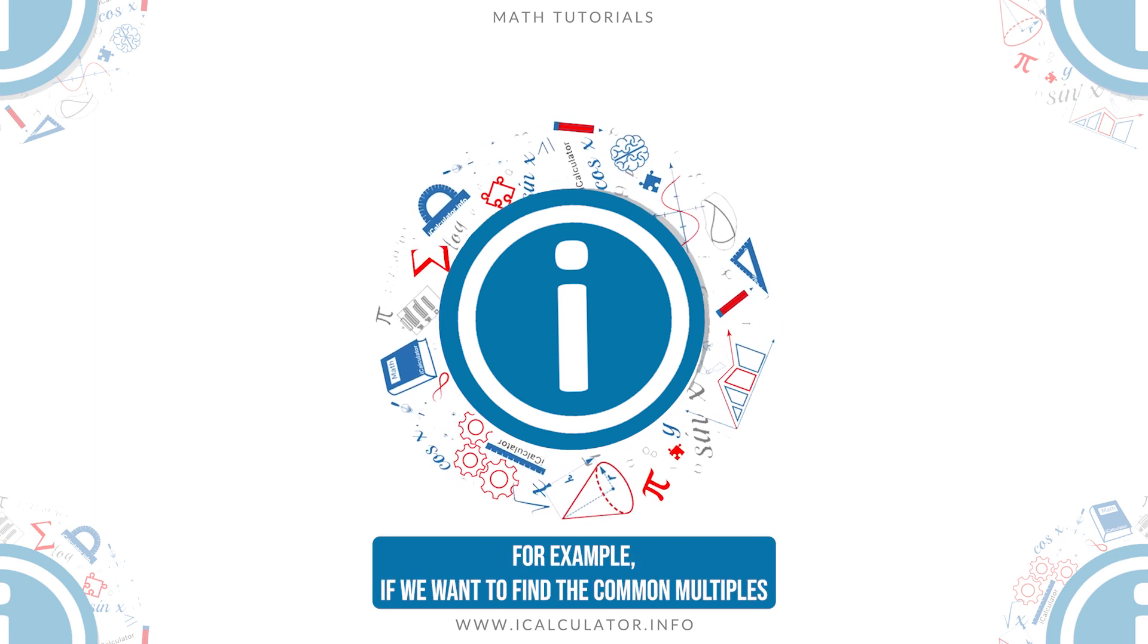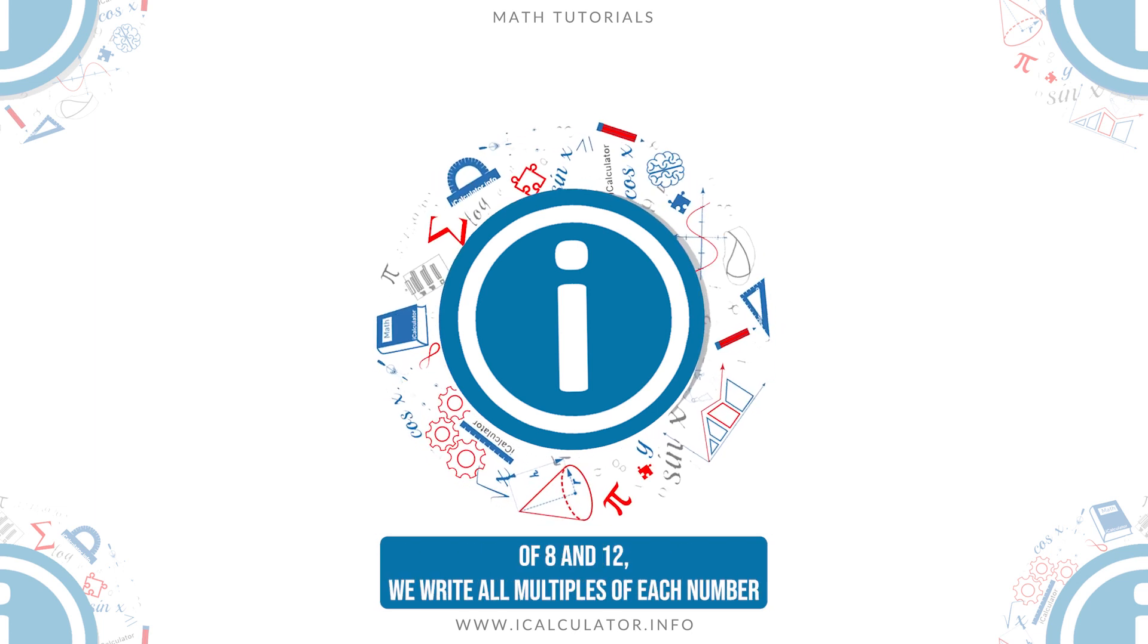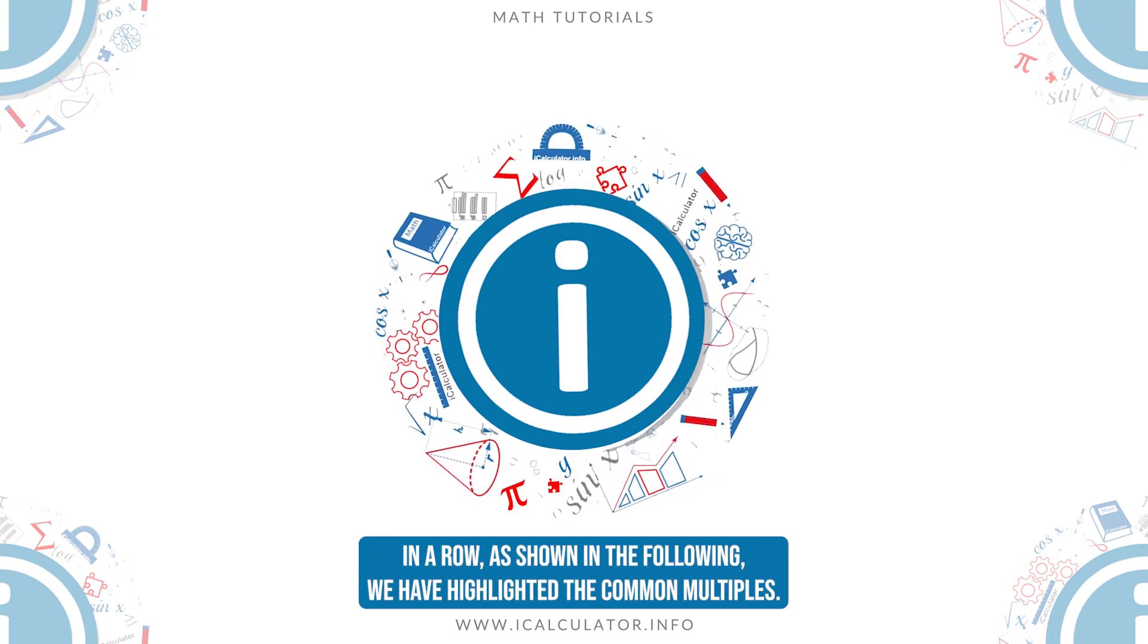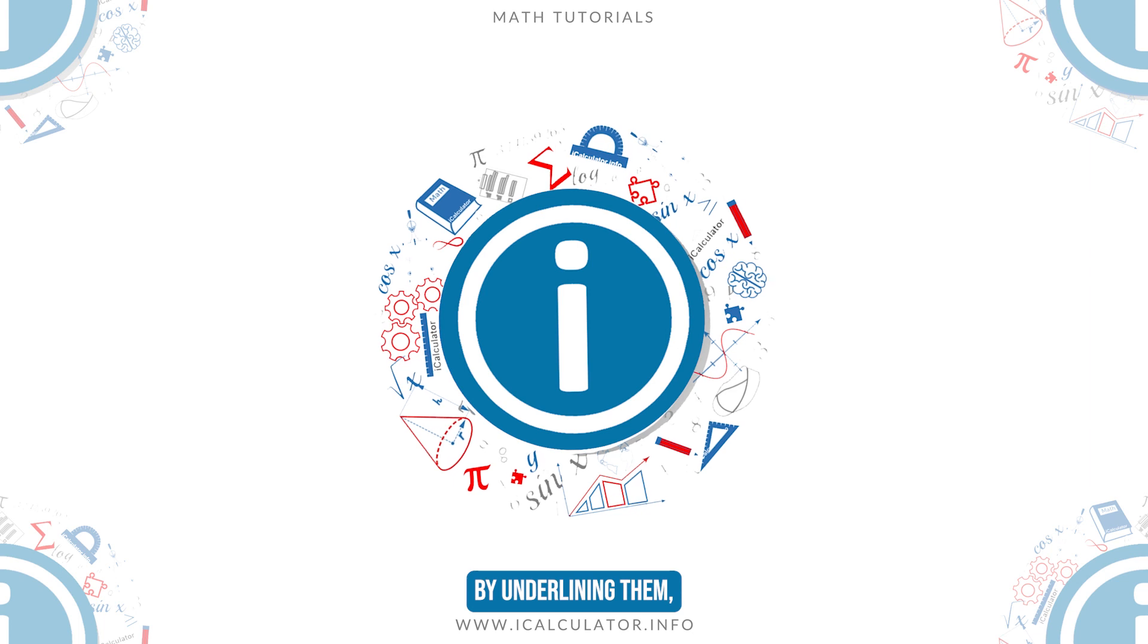For example, if we want to find the common multiples of 8 and 12, we write all multiples of each number in a row. As shown in the following, we have highlighted the common multiples by underlining them.